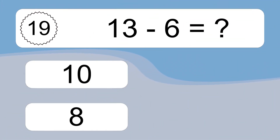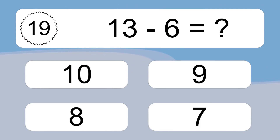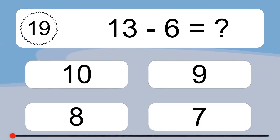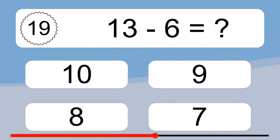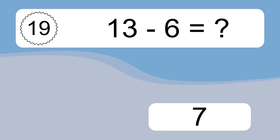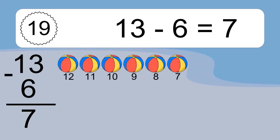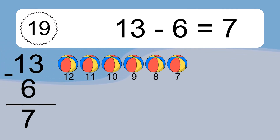13 minus 6 equals what? 13 minus 6 equals 7. Let's count it: 12, 11, 10, 9, 8, 7.